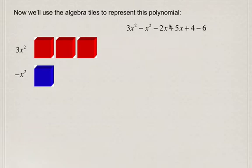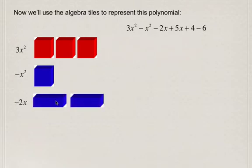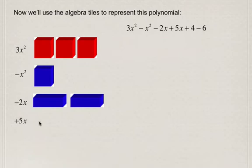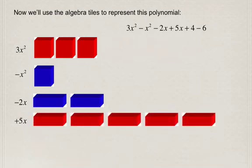For minus 2x, we're going to use a rectangular prism, and we make it blue because 2x is negative, so two blue rectangular prisms represent negative 2x. For positive 5x, we use five red rectangular prisms — each one represents positive x.